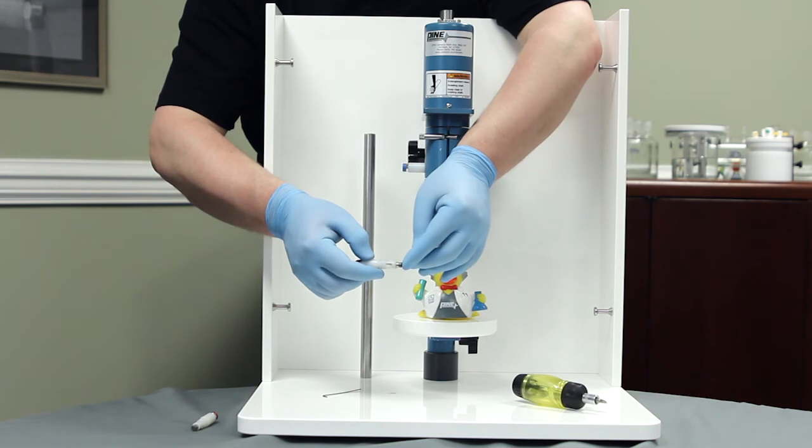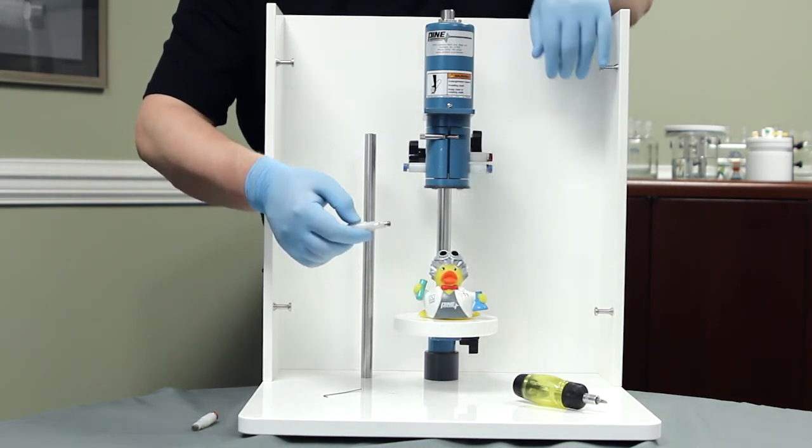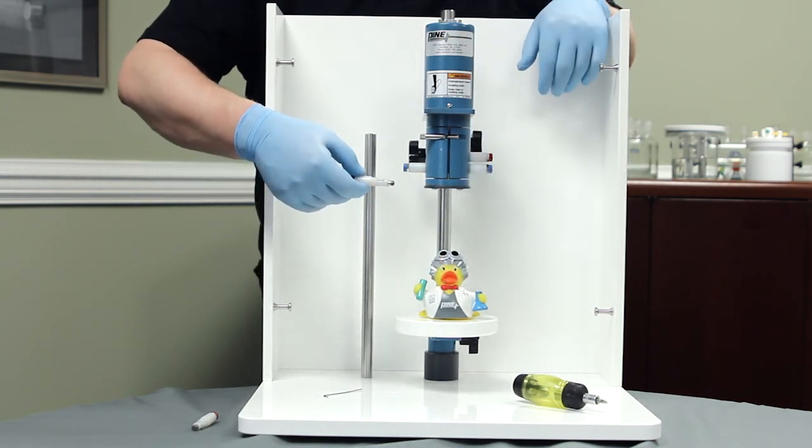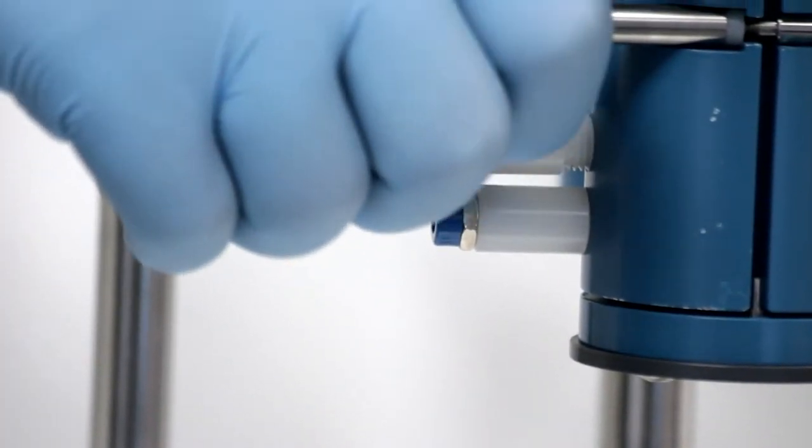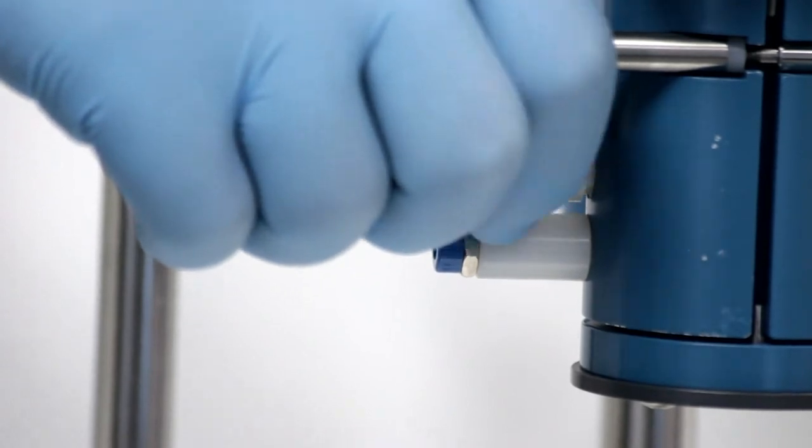Now, you can release the set screw, hold the spring-loaded contact in place, and simply use your fingers to thread the brush assembly back into the rotator.